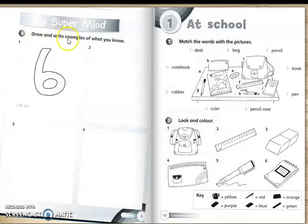This is draw and write example of what you know. I'm 6. This is number 6. This one is also no need to do because we have done already for this exercise. So, we go to the page 10, at school.